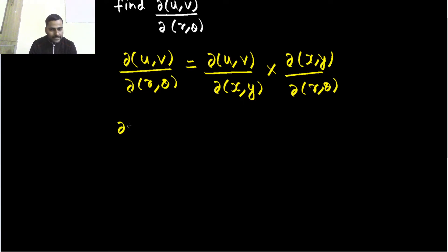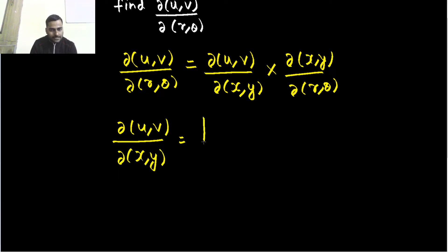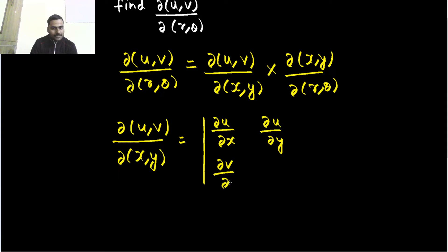My first goal is to find Jacobian of u, v with respect to x and y. This is simply the determinant: del u by del x, del u by del y, del v by del x, and del v by del y.